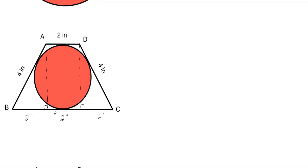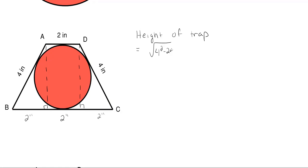The vertical lines are going to be the height of my trapezoid. Since the red circle is inscribed in the trapezoid, all the edges are touching, meaning the height of the trapezoid equals the diameter of my red circle. Using the Pythagorean theorem on one of the right triangles: four squared minus two squared gives me two square roots of three inches for the height of the trapezoid, which is also equal to the diameter of my inner circle.